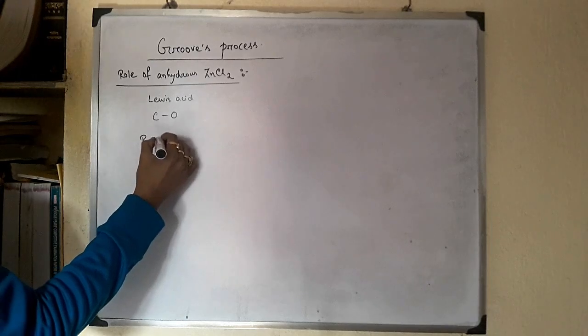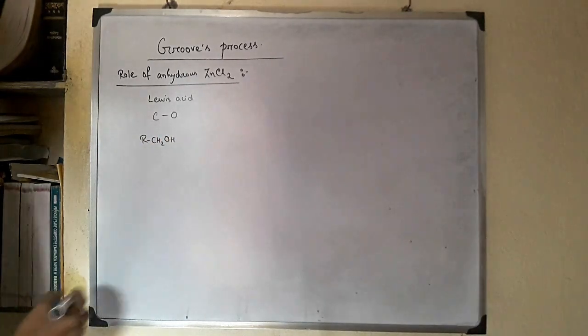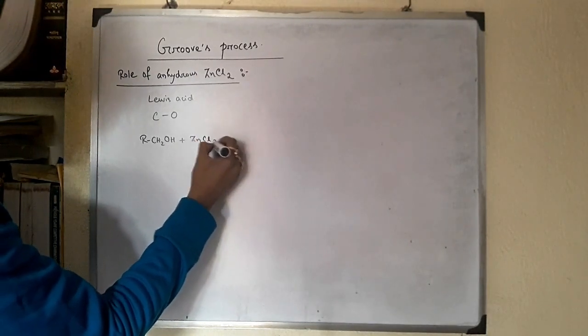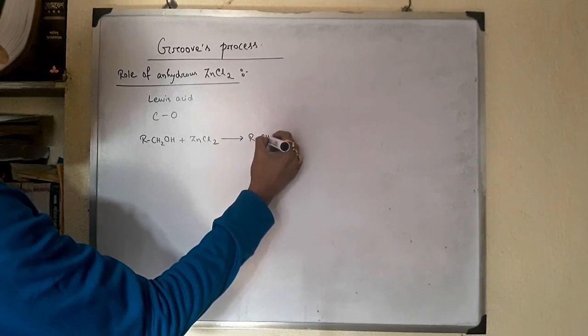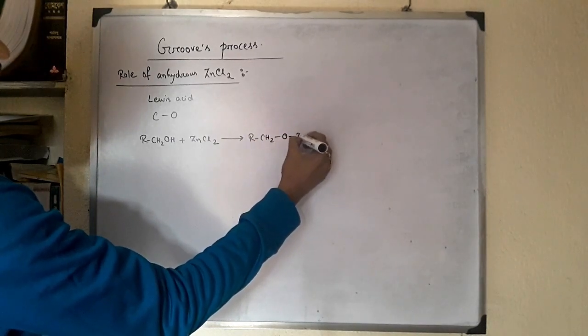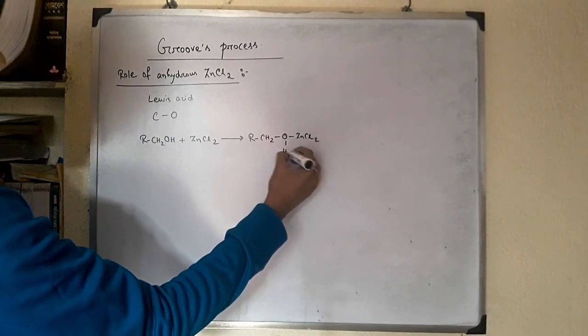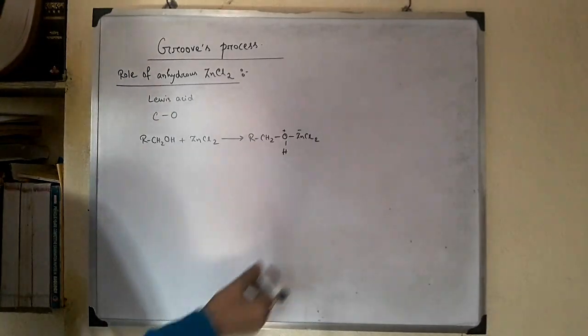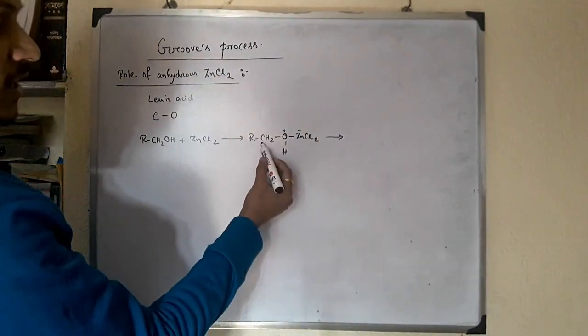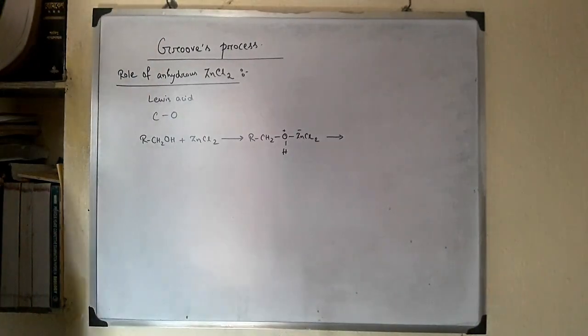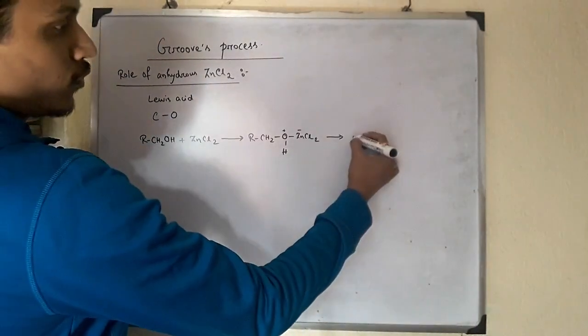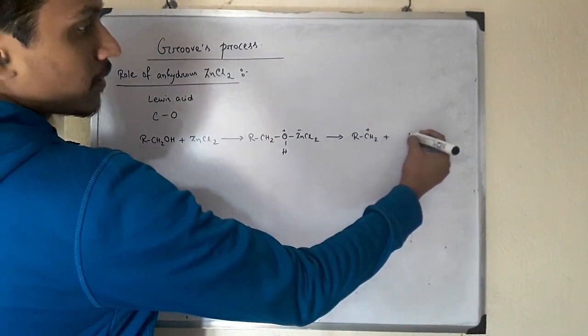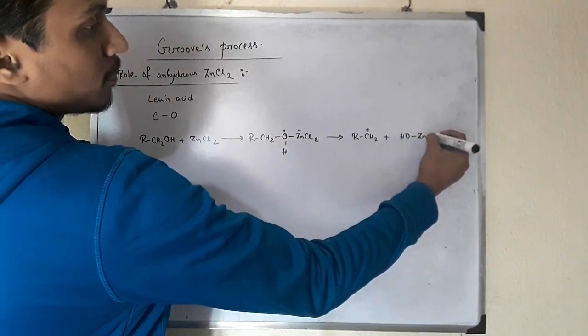Let's say this is the alcohol. This Lewis acid ZnCl2 coordinates with the oxygen atom of the alcohol. This oxygen becomes positive and ZnCl2 is negative. As a result, this carbon-oxygen bond becomes weak and it easily breaks to form the carbocation plus a complex ion.